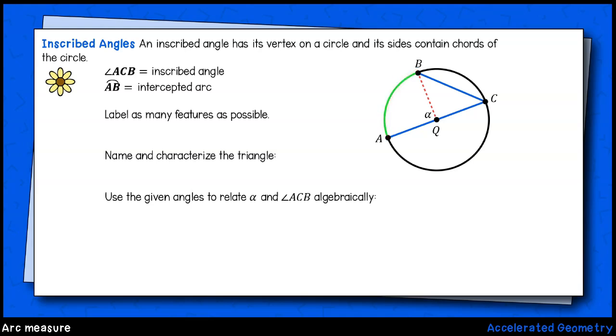Ultimately, we would like to know the measure of arc AB. You may also notice this angle alpha with its vertex at the center of the circle. That is a central angle. Let's see how many other features we can label.